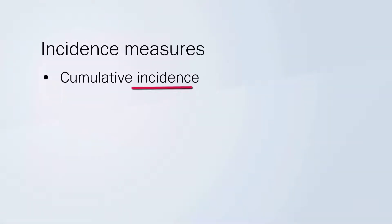There are two types of incidence measures: cumulative incidence, which is often just referred to as incidence, and incidence rate. Cumulative incidence is a very important measure in epidemiology. It measures the number of new cases of a disease during a specified time period. To measure this, you would take a group of people or population that are disease-free and follow them up for the time period you wish — for example, one year.